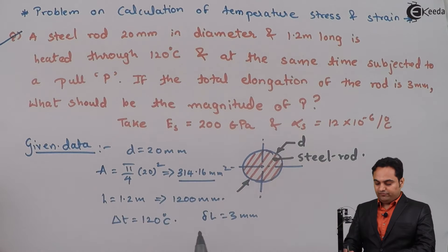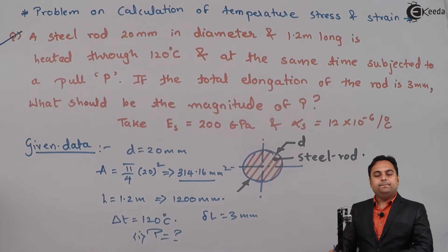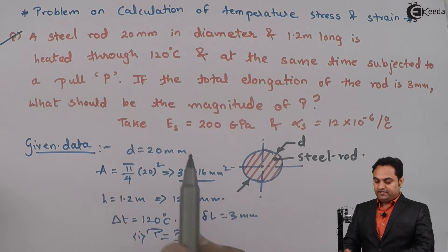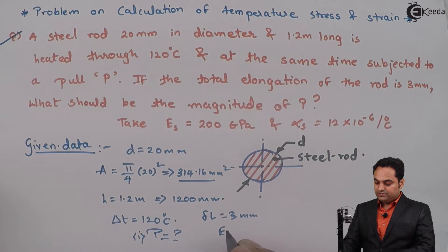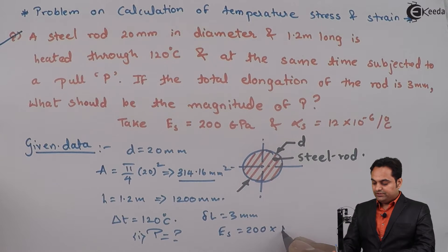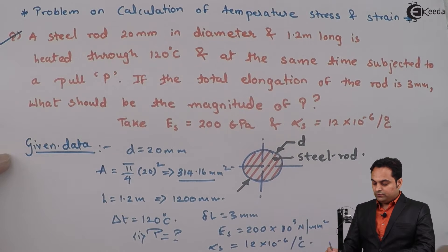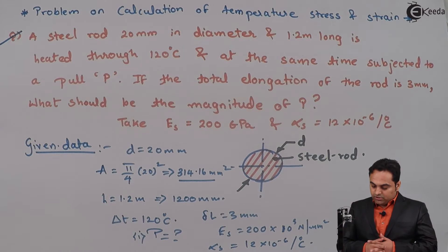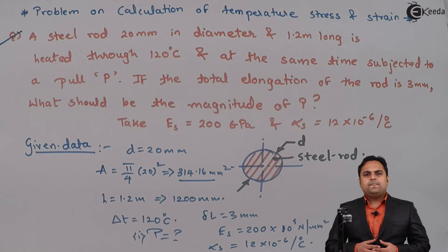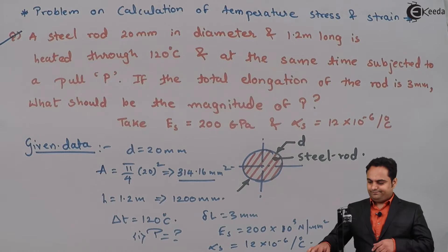We need to find the magnitude of P, the applied load. Young's modulus for steel, E_s = 200 GPa = 200 × 10³ N/mm². The coefficient of thermal expansion alpha_s = 12 × 10⁻⁶ per degree Celsius.